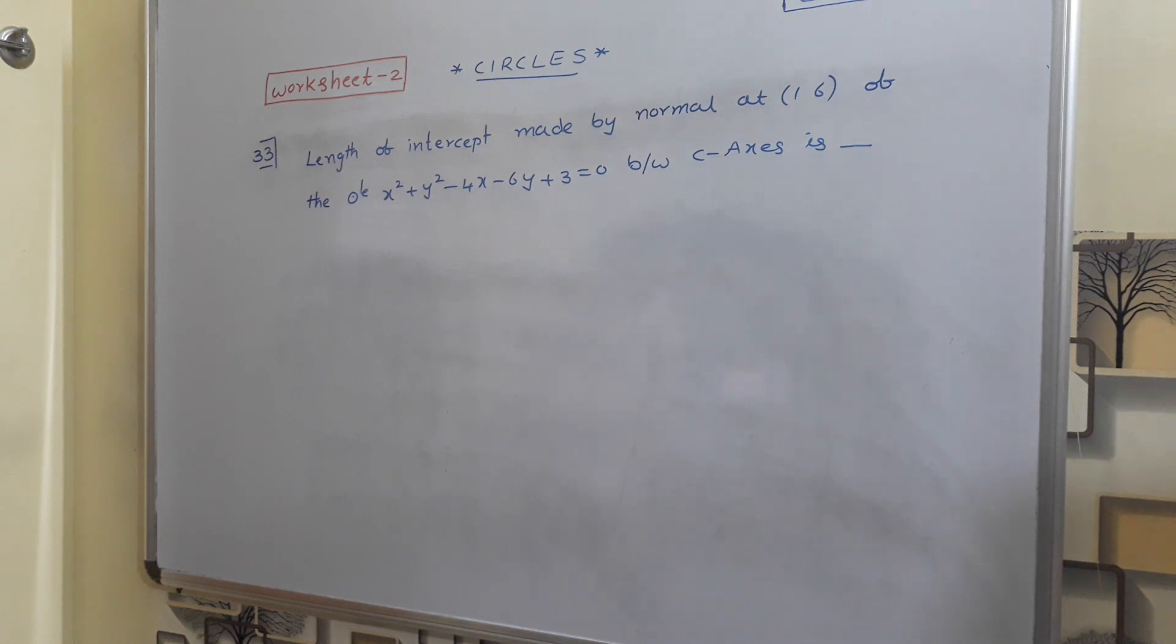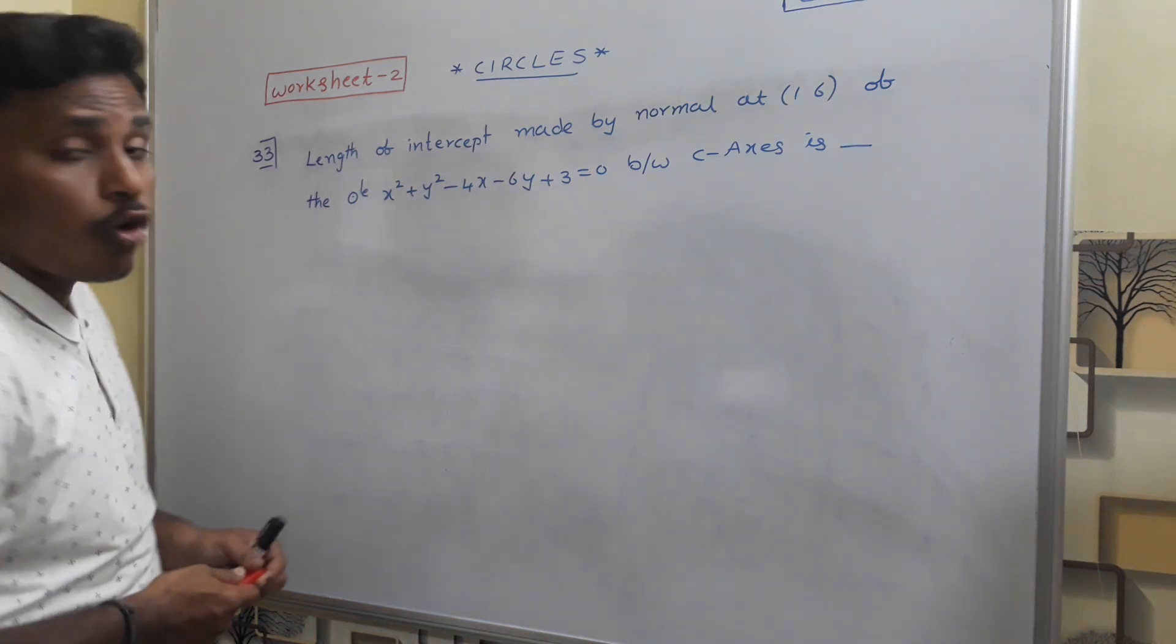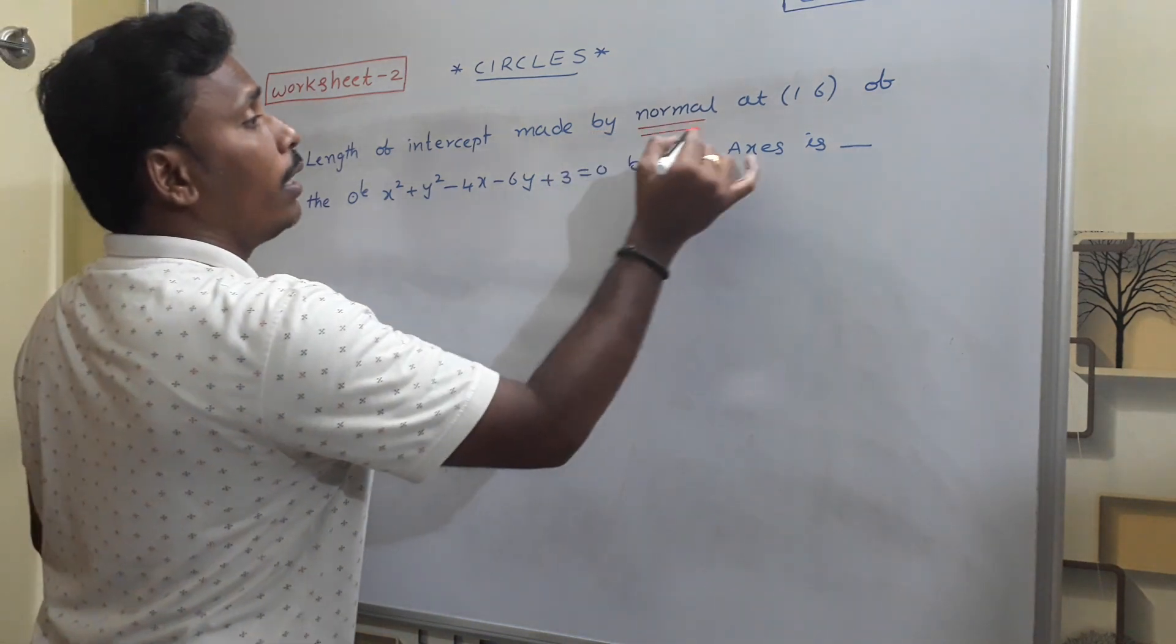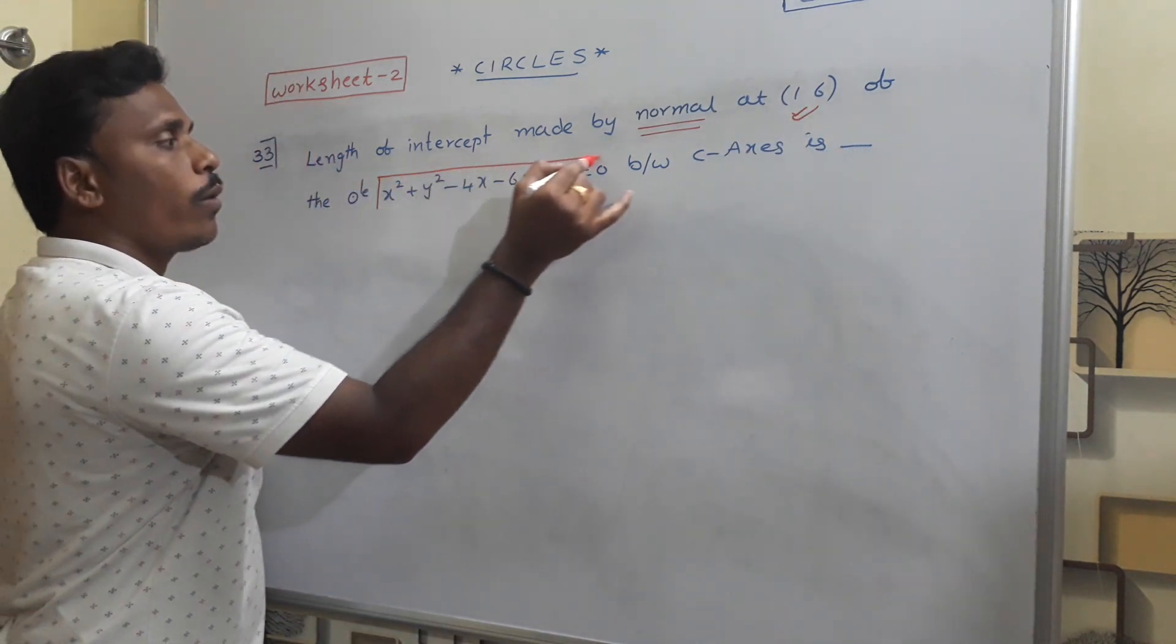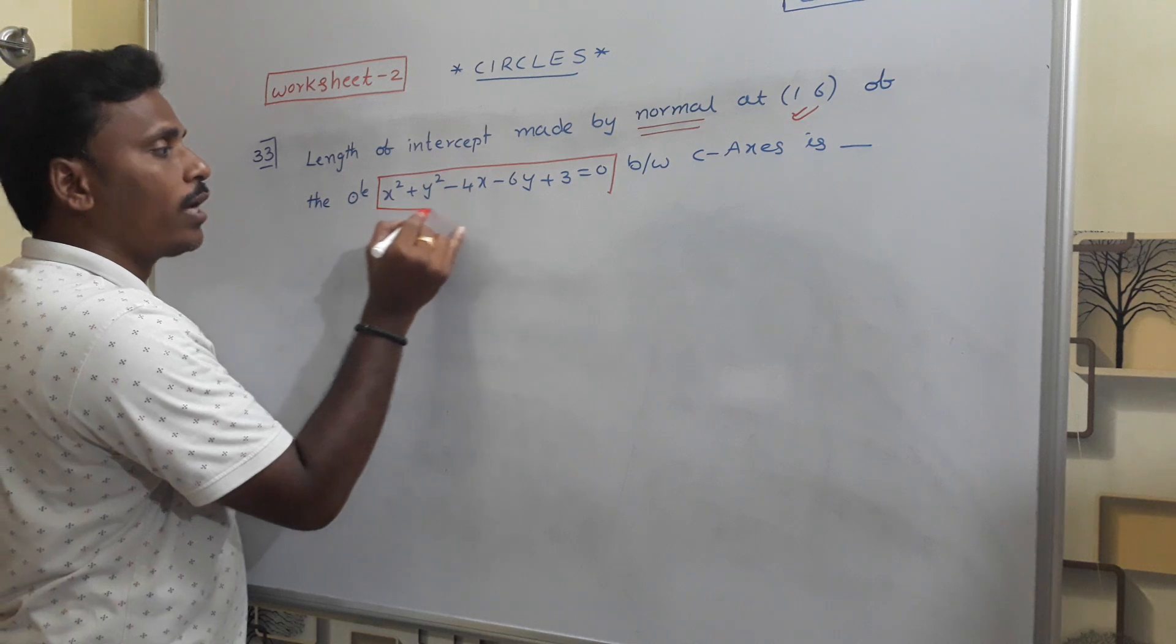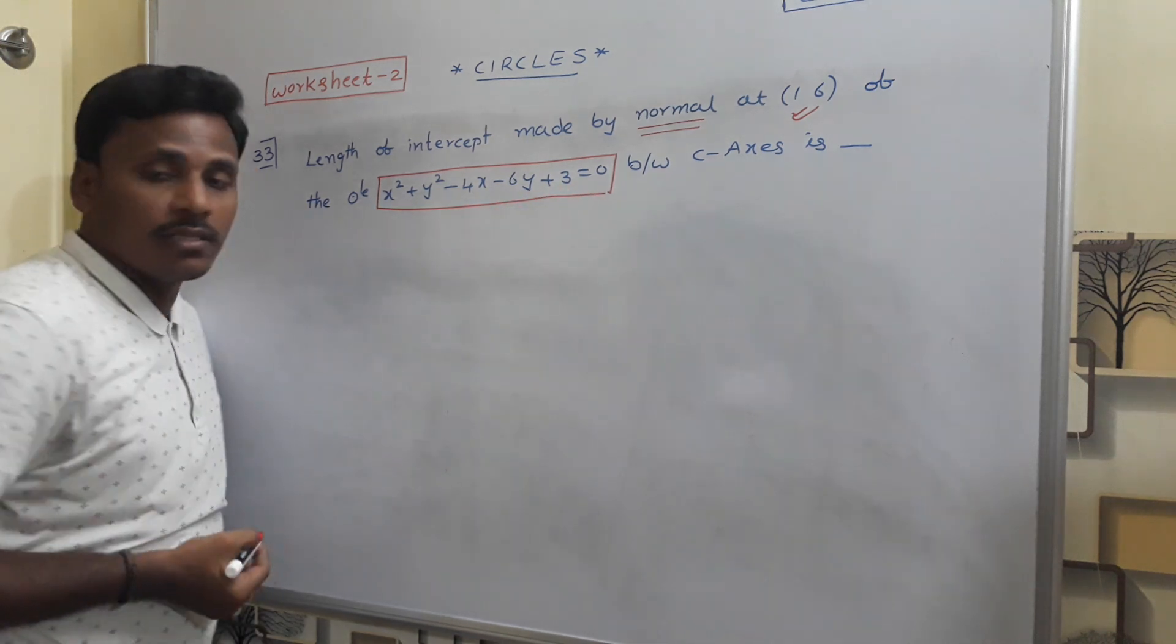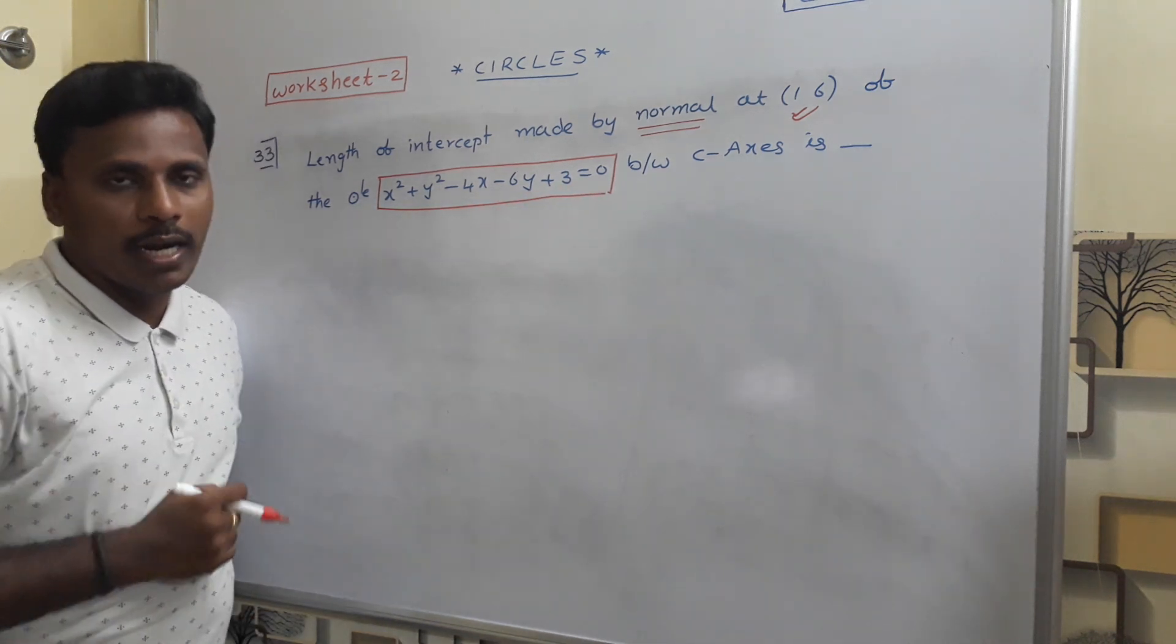So, the third problem of this worksheet: length of intercept made by the normal at (1,6) to the circle x² + y² - 4x - 6y + 3 = 0 between coordinate axes.